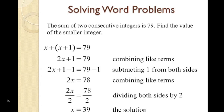Remember, we are trying to get the variable x by itself. Dividing both sides of the equation by 2 gives x equals 39. To check the answer, replace all x's in the equation with 39. If you try this on your own, you will get 39 plus 40 equals 79, indicating that the answer is correct.